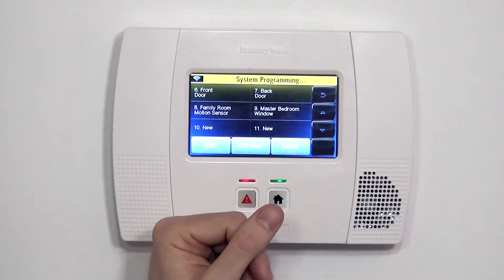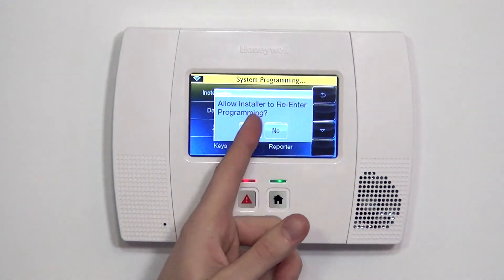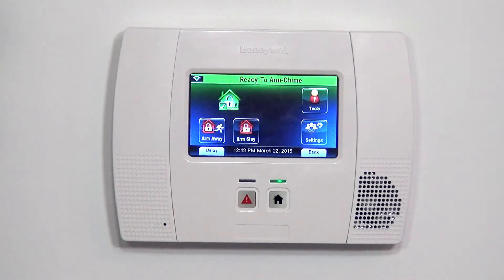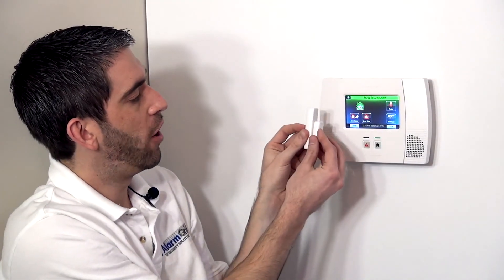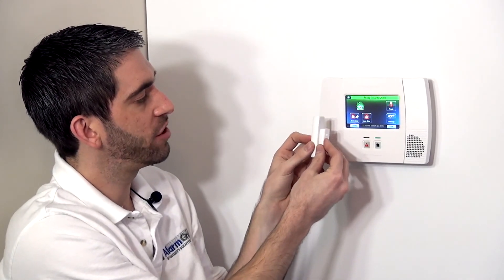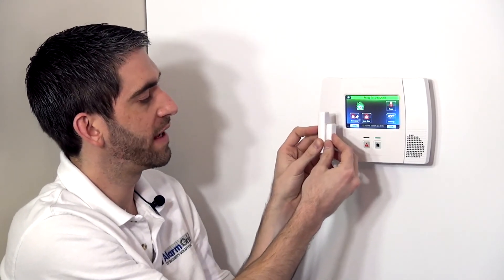So we save it and we exit to the home screen. And to make sure that we did everything properly, we simply fault the device, open the door or the window and make sure that the panel responds accordingly.